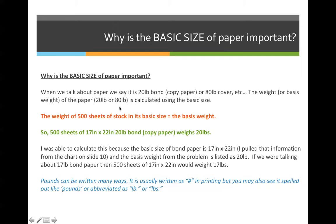So why is the basic size of paper important? When we talk about paper, we say it is 20 pound bond paper, which is our copy paper that goes in a printer, or 80 pound cover, or some different value. But it always has a number and it always has a pound. The weight, or the basis weight of the paper — which in the case of the example is 20 pounds — is calculated using the basic size of paper.